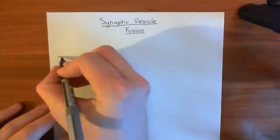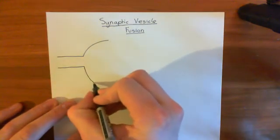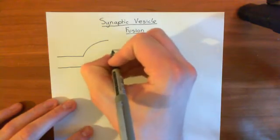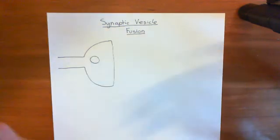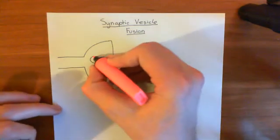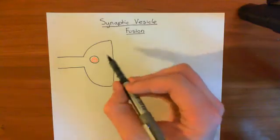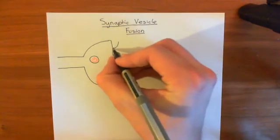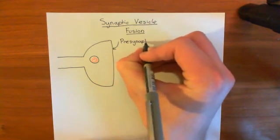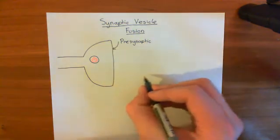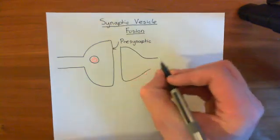Let's say this is an axon terminal here. In the axon terminal, we will create synaptic vesicles — here is a synaptic vesicle, a vesicle filled with neurotransmitter. What we want to do is dock this synaptic vesicle at the presynaptic membrane. This is the presynaptic membrane, which faces onto the postsynaptic cell — so this might be a dendritic spine of the postsynaptic cell.